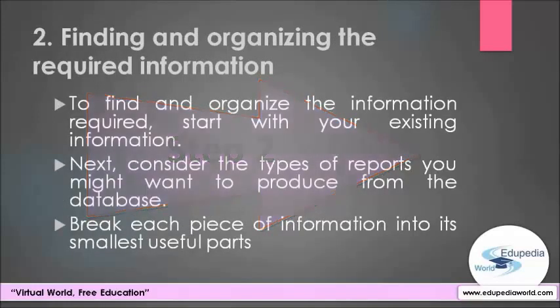To find and organize the information required, start with your existing information. For example, you might record purchase orders in a ledger or keep customer information on paper forms in a file cabinet. Gather those documents and list each type of information. If you don't have any existing forms, imagine designing a form to record customer information — what information would you put on those forms? For example, suppose you currently keep a customer list on index cards. Examining these cards might show that each card holds a customer name, address, city, state, postal code, and telephone number. Each of these items represents a potential column in a table.